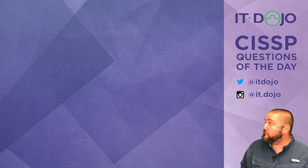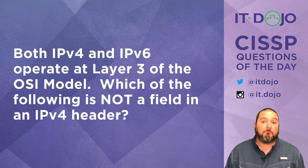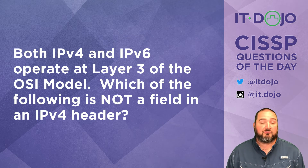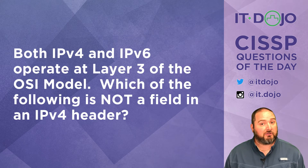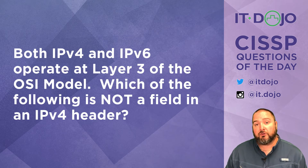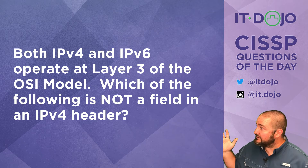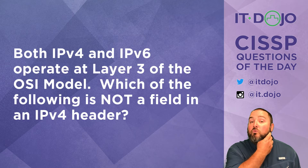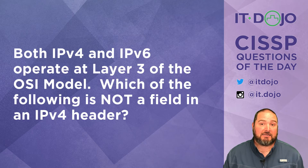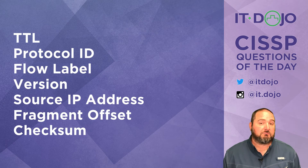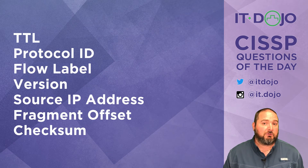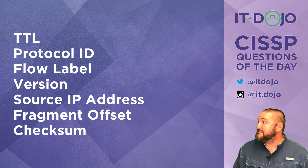Let's do question number two. Both IP version 4 and IP version 6 operate at layer 3 of the OSI model. My question for you is: given this list of answer choices, which of them is not in an IPv4 header? Click pause if you need to give that some thought, and when you think you have the right answer, click play and we can break it down.